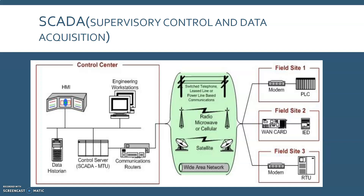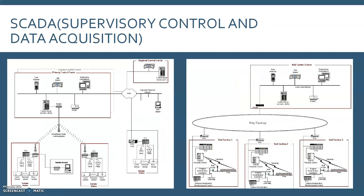The corporate network has access to all control centers using the WAN, and field sites can be accessed remotely for troubleshooting and maintaining operations. As an example corresponding to railway monitoring and control: a railway control center houses the SCADA system and three sections of the railway system. The SCADA system polls each rail section for information.